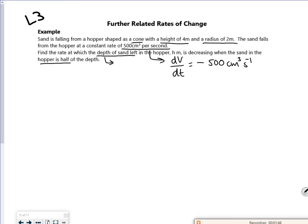Right, the depth. If I call the depth h, then I'm looking at dh/dt. That's what I want to find. And when it's half its initial depth, so I'm looking when h is 2 metres, its height is 2 metres. So I've got h for height, r for radius.